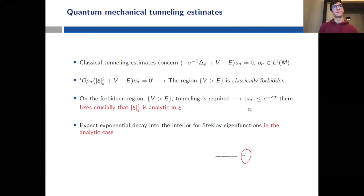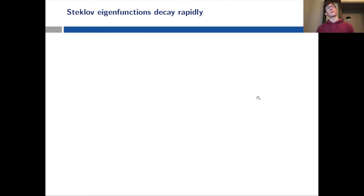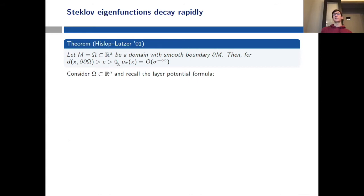Now let's see what we can actually prove about Steklov eigenfunctions decaying rapidly. The first result I want to remind you of is a very nice theorem of Hislop and Blitzer, who study a domain in ℝ^d with smooth boundary. They show that Steklov eigenfunctions don't show exponential decay but do show super-polynomial decay. I think this is such a nice proof that I'm going to show it to you.